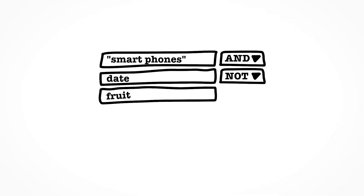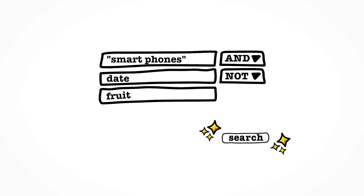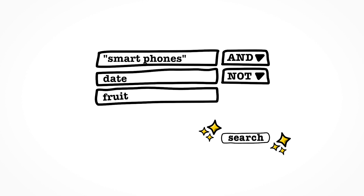Start by going to a database, entering your search terms in the boxes, and changing the Boolean operators — those magic words: AND, OR, and AND NOT — depending on what you're looking for.